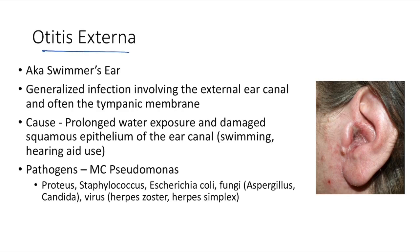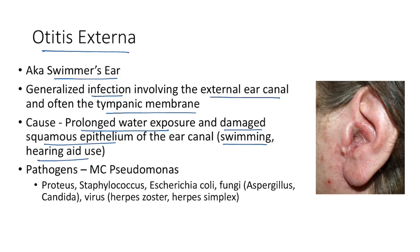The first condition is otitis externa, also known as swimmer's ear. It is a generalized infection involving the external ear canal and often the tympanic membrane. The cause is prolonged water exposure as in swimming and damaged squamous epithelium of the ear canal, like from earring aid use. The most common pathogen is Pseudomonas. Other pathogens include Proteus, Staphylococcus, E. coli, fungi like Aspergillus and Candida, and viruses like herpes zoster and herpes simplex.